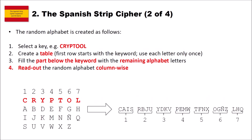The random alphabet is created as follows. First you select a random key — in our example, the word 'criptool'. Then we create a table where the first row starts with the keyword, using each letter only once. We fill the keyword into the table, using the letter O only once, and then put the remaining alphabet letters below the keyword. After that, we read out the random alphabet column-wise. So the first part of our alphabet is C, A, Y, S from the first column, then R, B, J, U from the second column, and so on, until the complete alphabet is read out. The number of columns is defined by the length of the keyword.